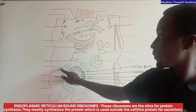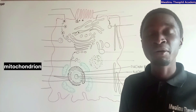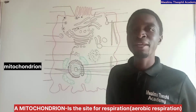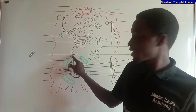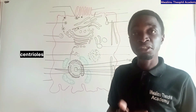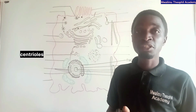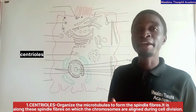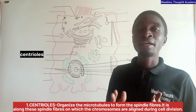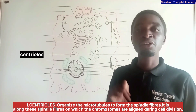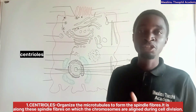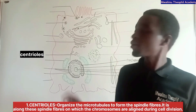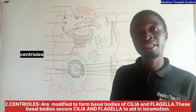This is a mitochondrion. The mitochondrion is the site for respiration. The next part is the centrioles. The major role of centrioles is to organize microtubules to form spindle fibers, around which chromosomes are aligned during cell division. The second role of centrioles is that they are modified to form basal bodies of cilia and flagella.